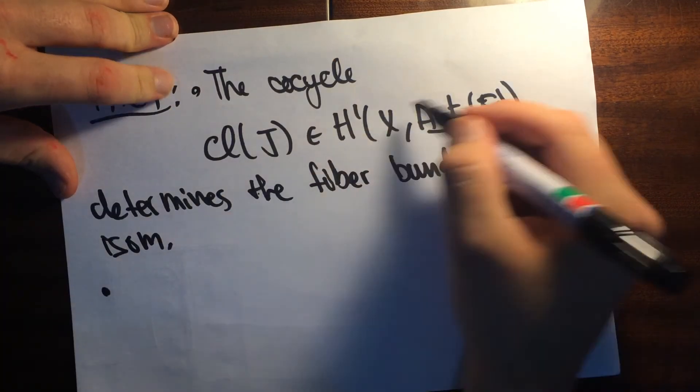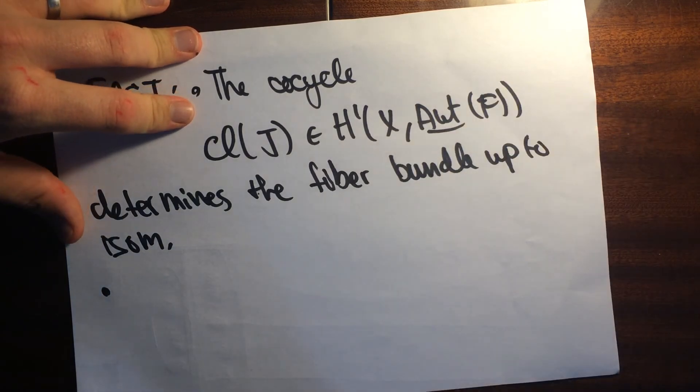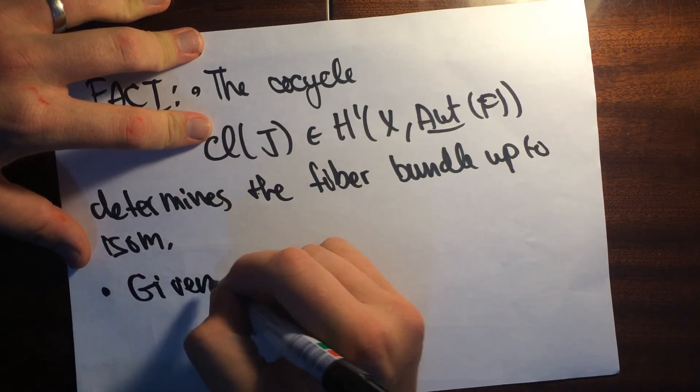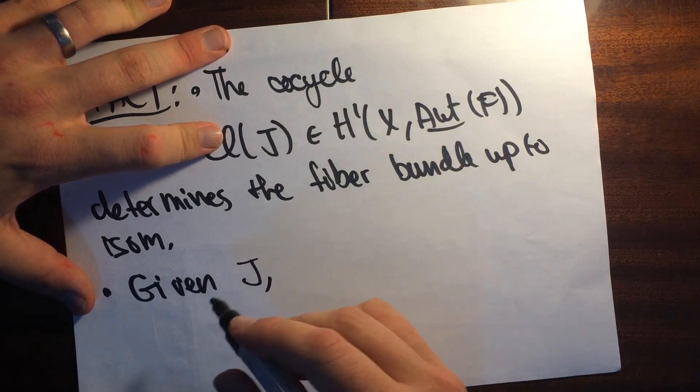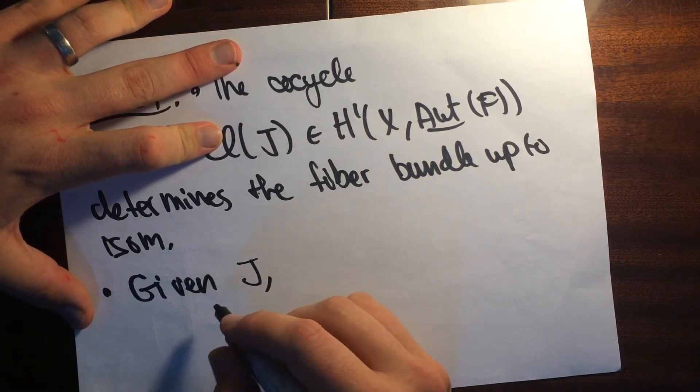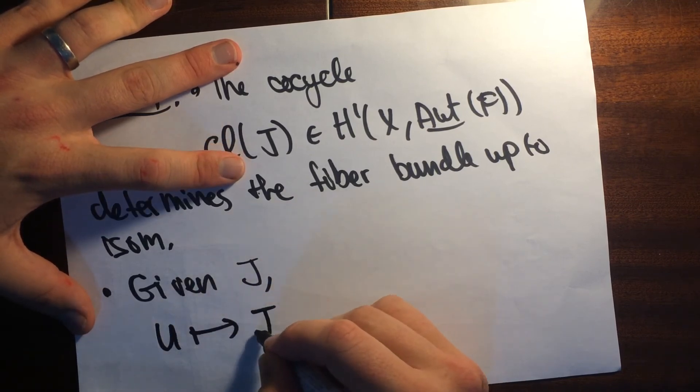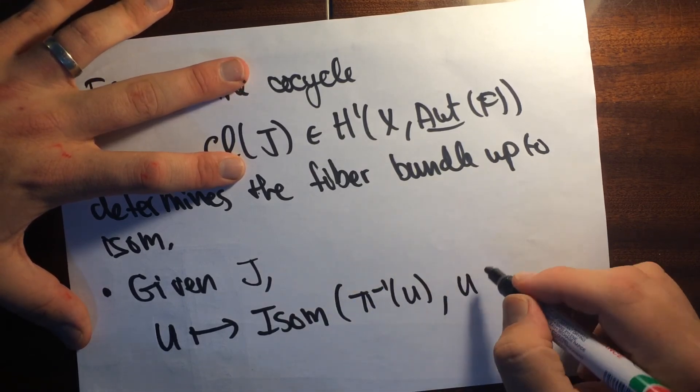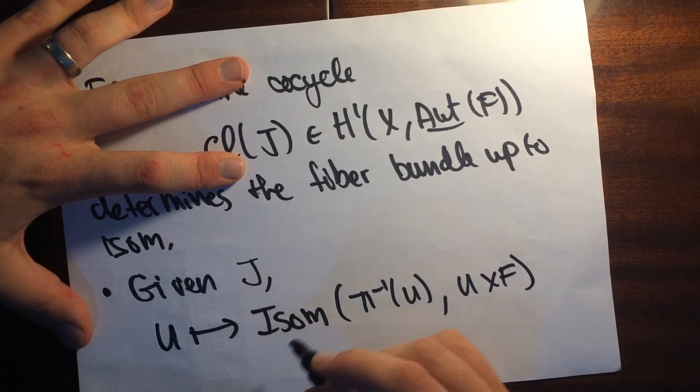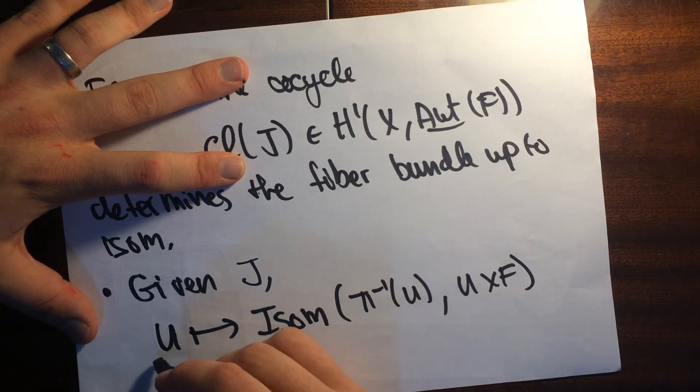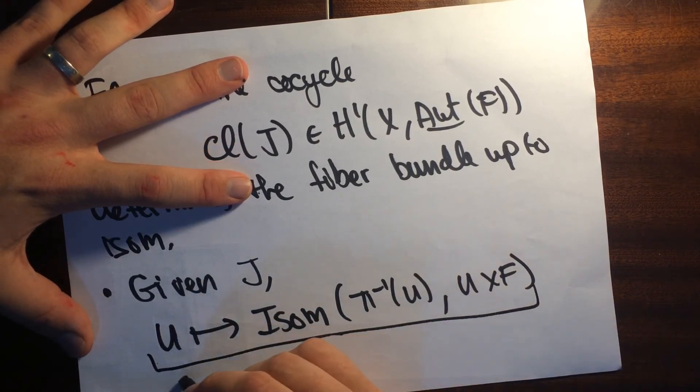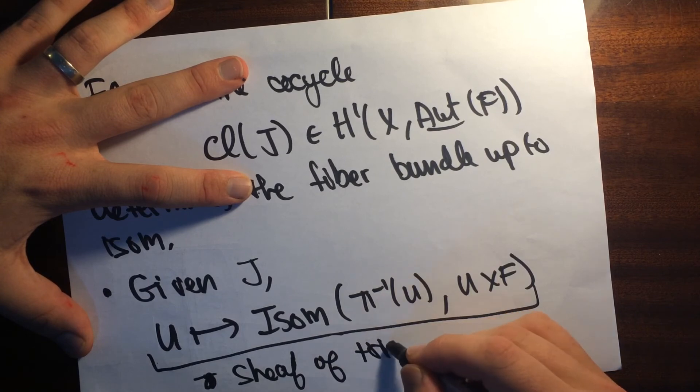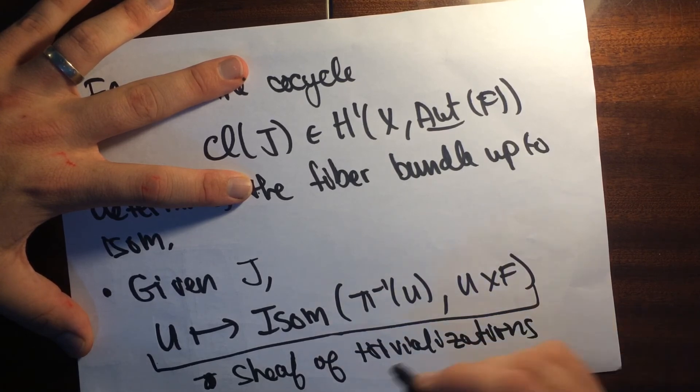Maybe I can say one more thing. So maybe you know that these things classify torsers, and what's the associated torser? So the torser is the following. What we can do is we can construct a sheaf. Given J, what we'll be able to do is we'll take u and we'll map it to isomorphisms of pi inverse u to u cross f. This association, this thing here, defines the sheaf of trivializations of J.